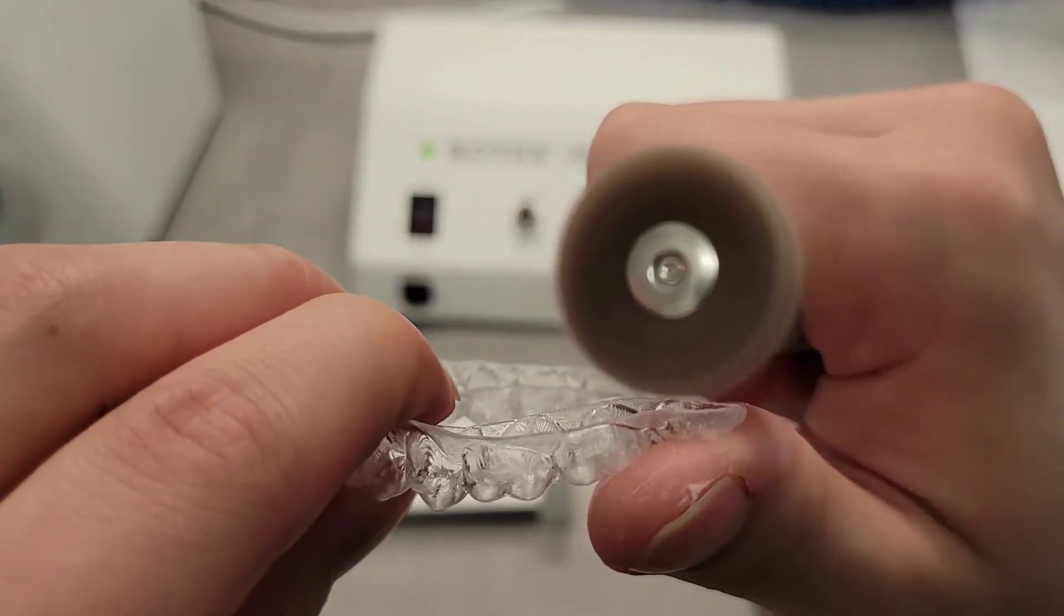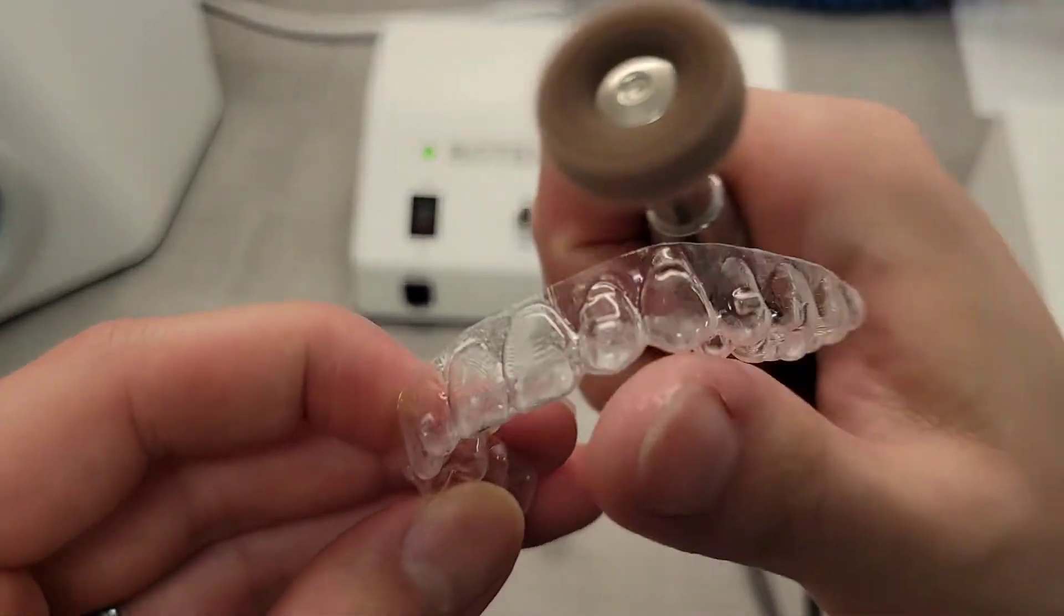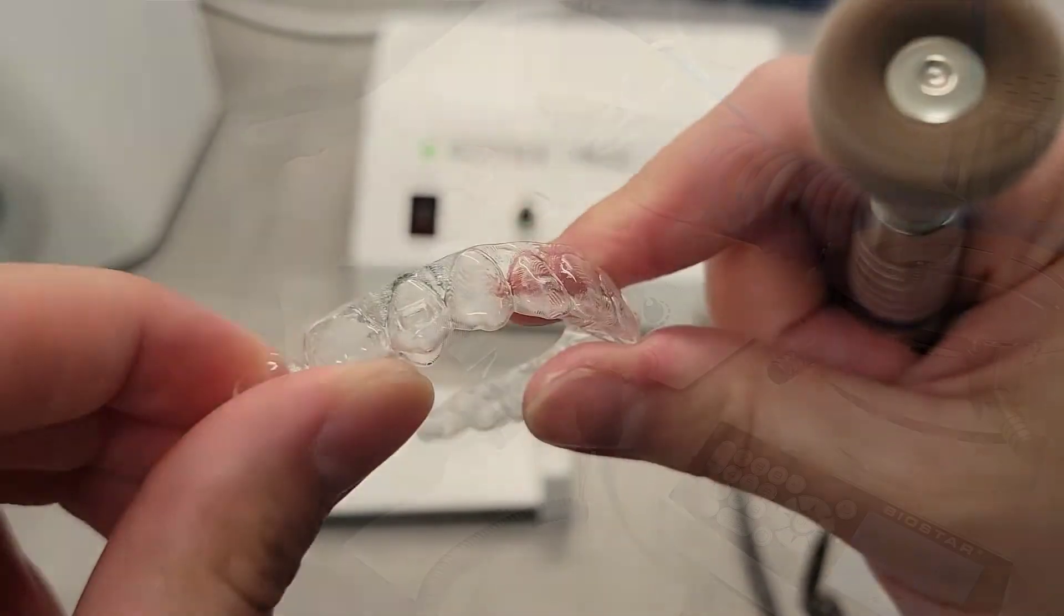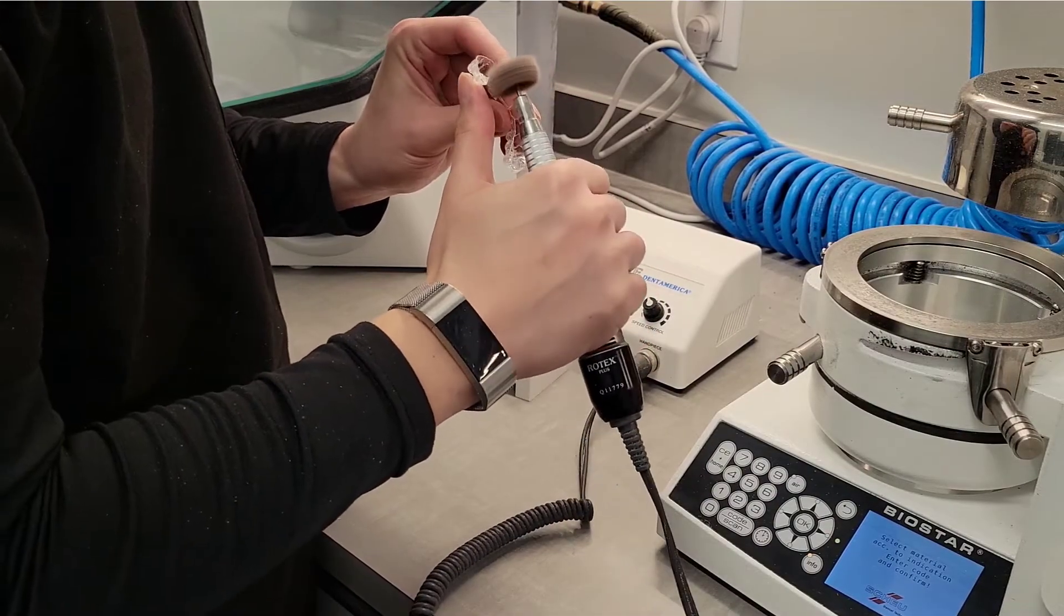Run your finger along all edges for any rough spots or bumps, and run the burr along them if you find any. It is very easy to take off too much material. The idea is not to shape the aligner too much, but rather buff out any problem spots you couldn't get by trimming.